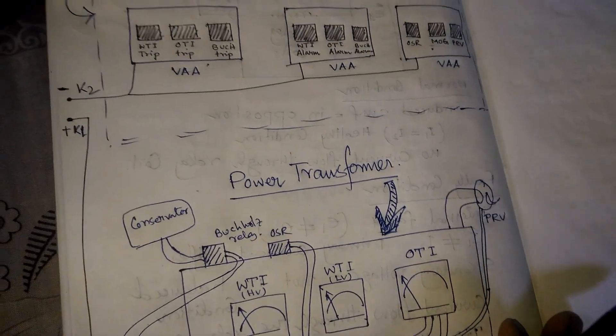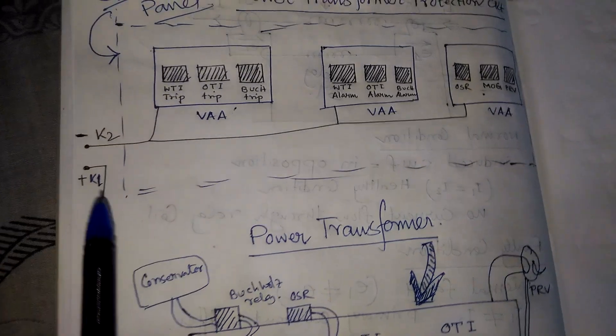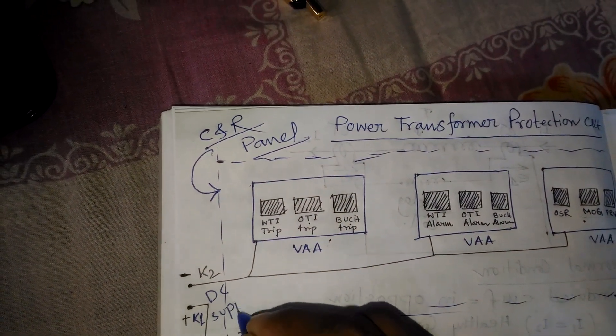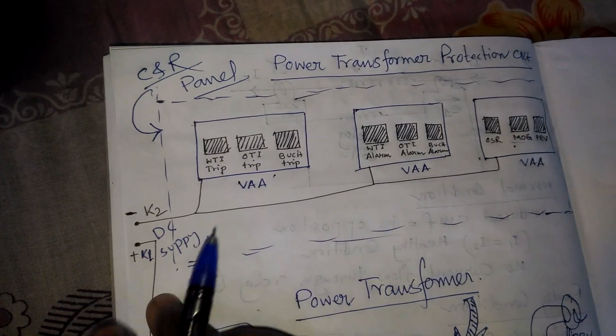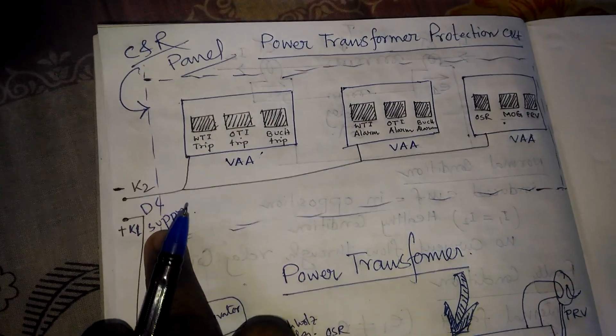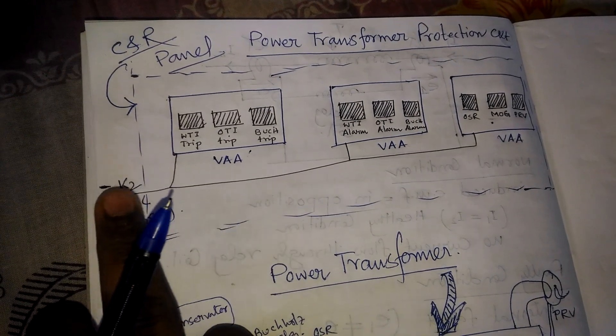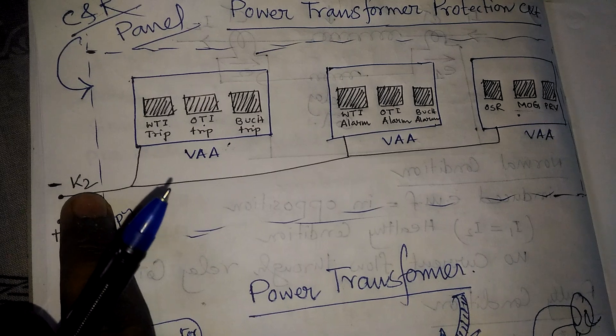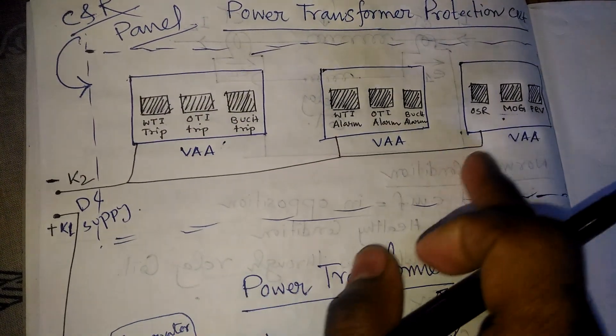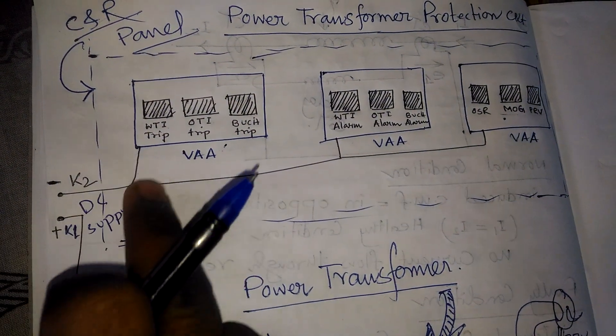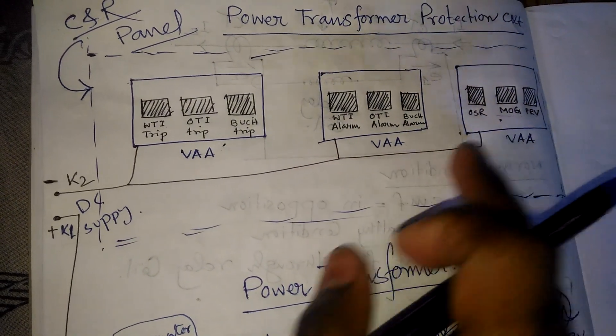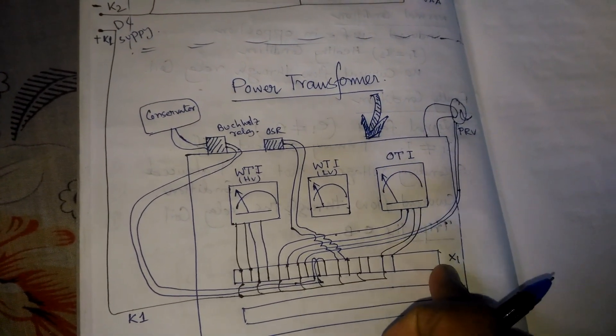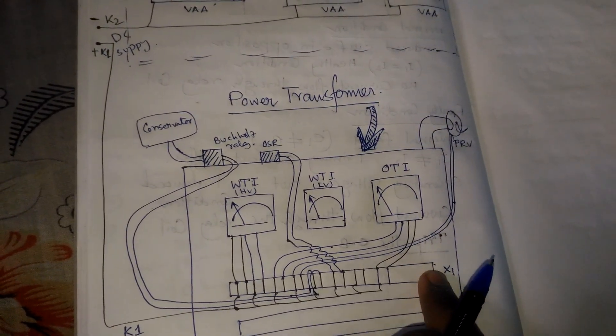The DC supply is provided from the DC DB. We are giving the negative K2 to every relay, and the positive supply is given to the Marshalling box of the power transformer X1 terminal box.